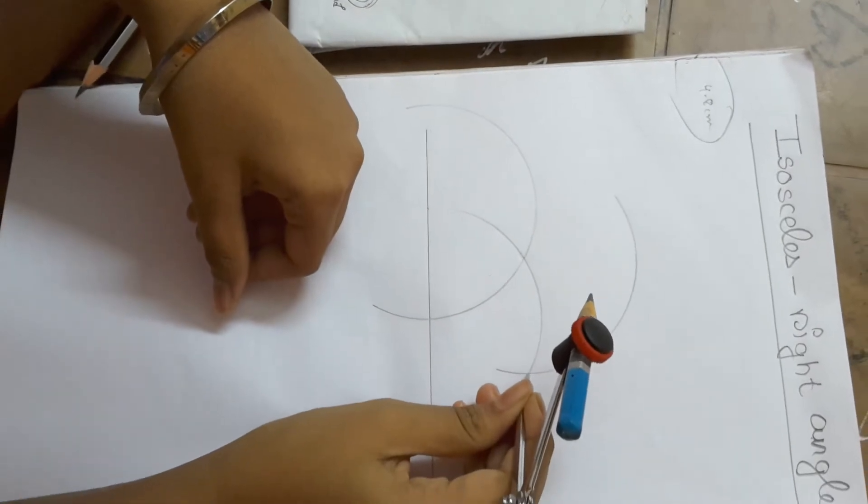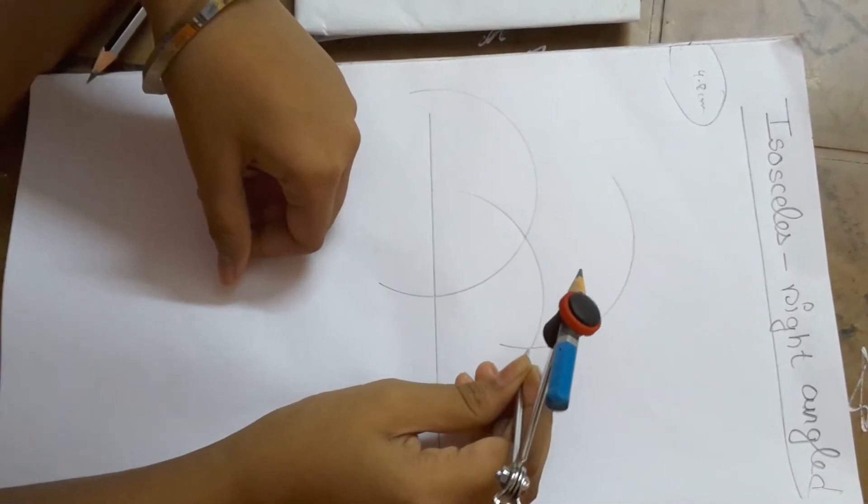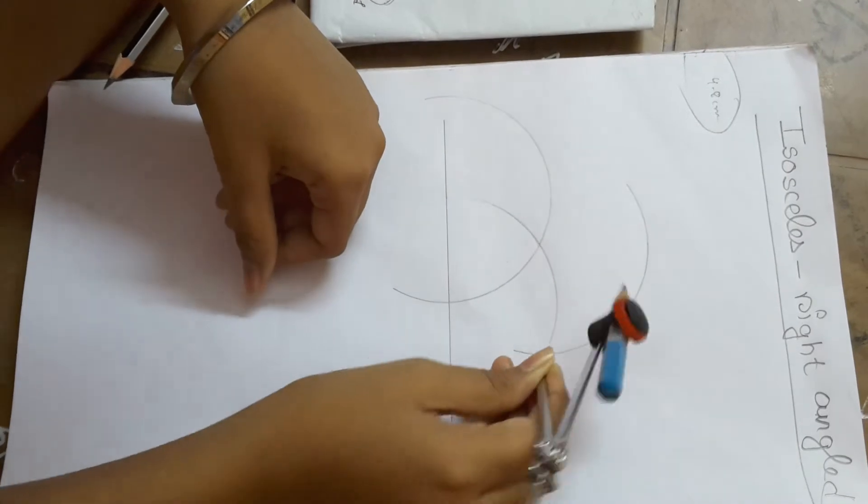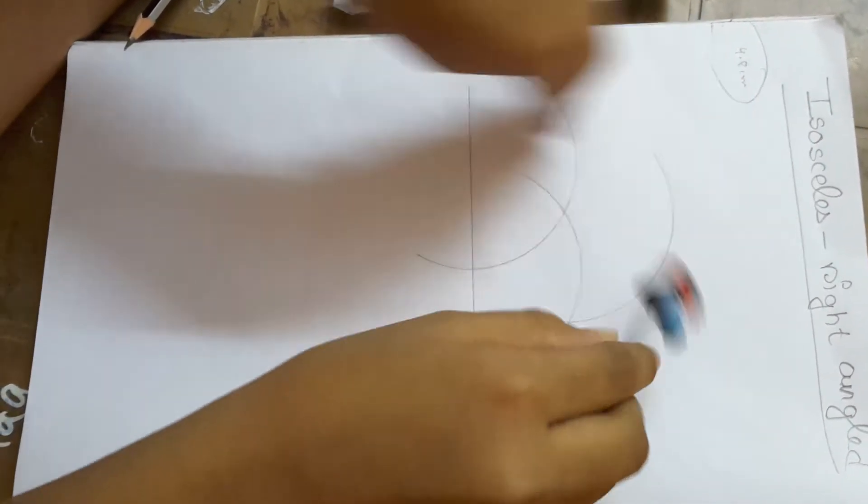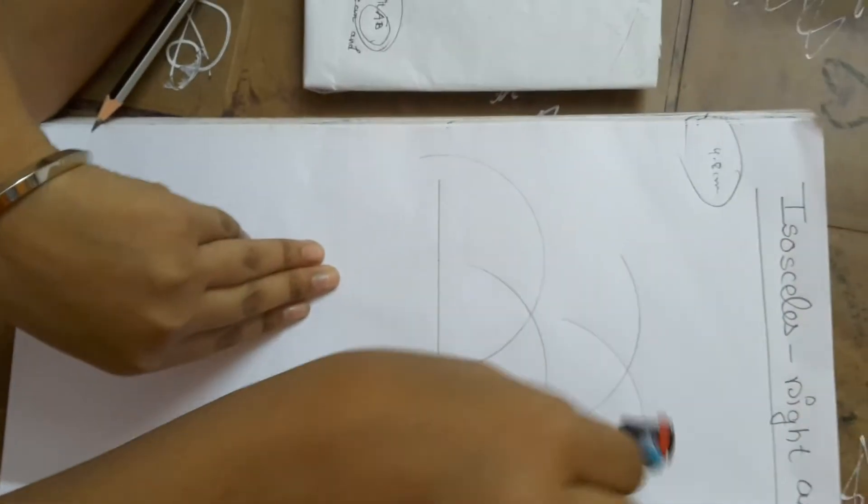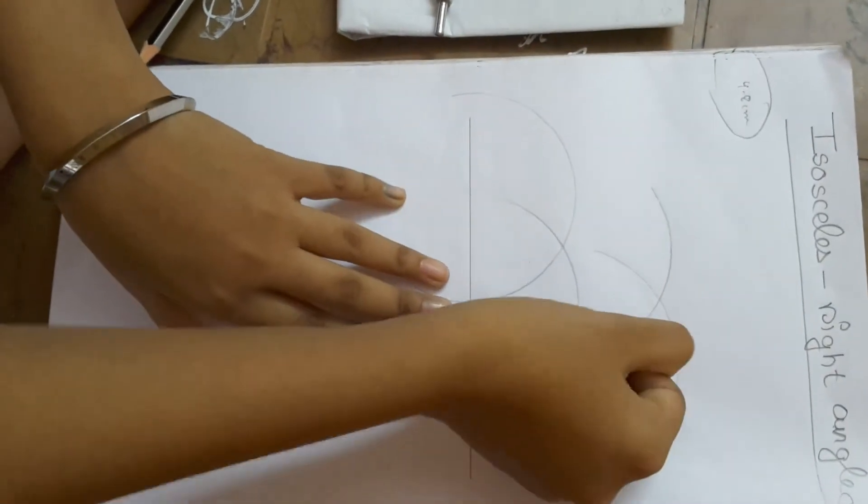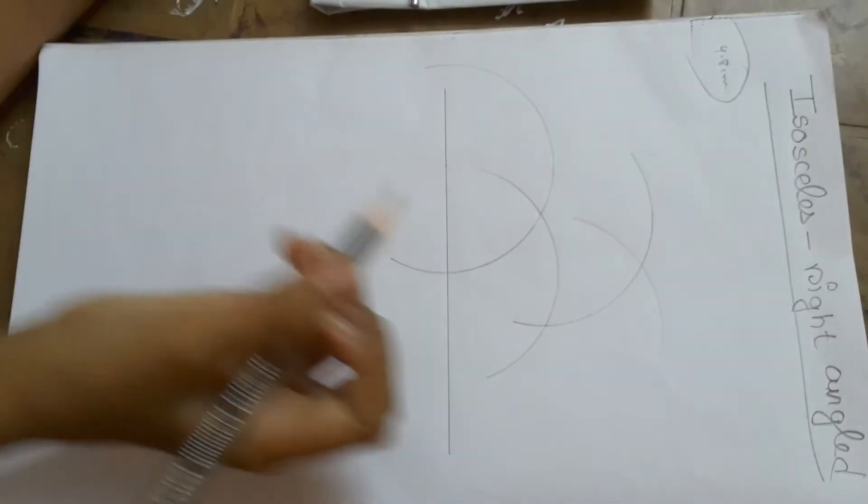And you put the compass here in the point. Again. And then it cut the arc here. So now you are going to join the line.